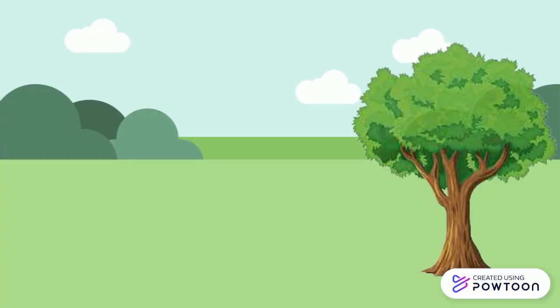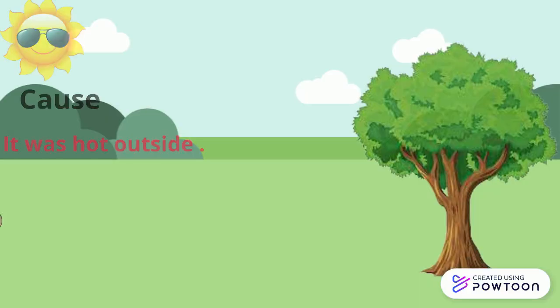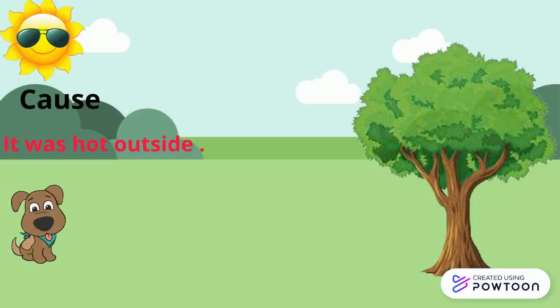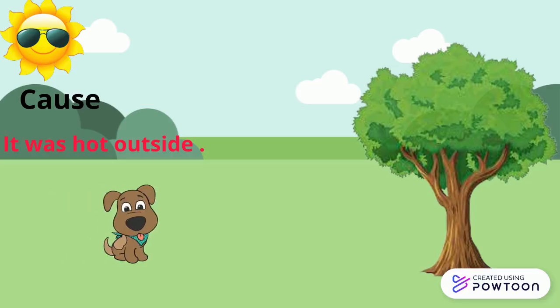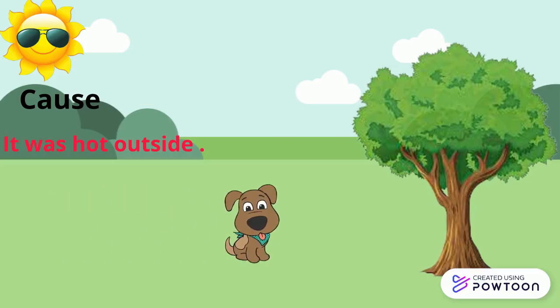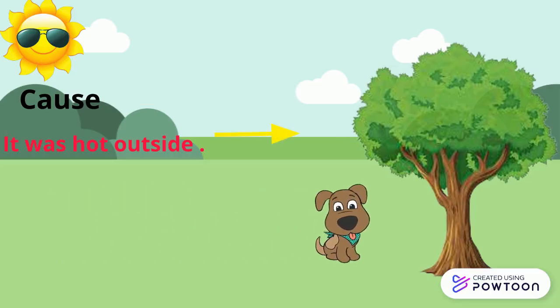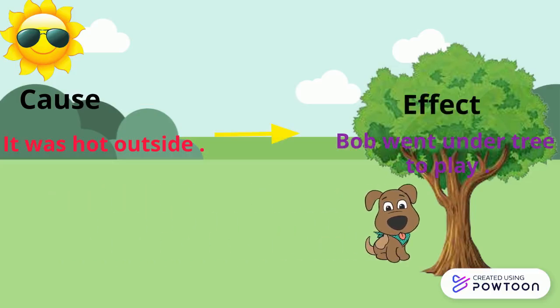Bob went into his doghouse to get out of the rain. Let's find the cause and effect. The cause in the story was it was hot outside. Effect: Bob went under the tree to play.